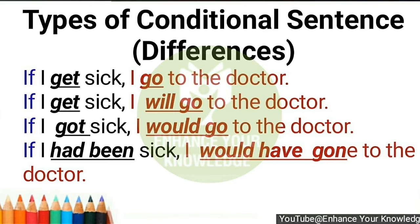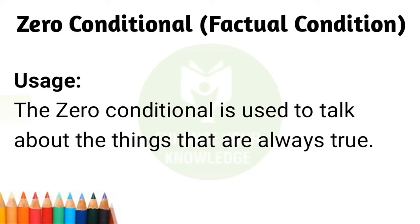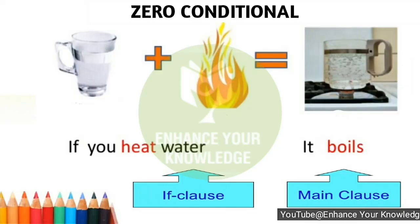Now we'll discuss each type one by one. Let's start with zero conditional. The zero conditional is used to talk about things that are always true — they describe facts or things very likely to happen. We can't argue about it because it is used to make statements about the real world and universal truths, such as scientific facts, and its result is certain.